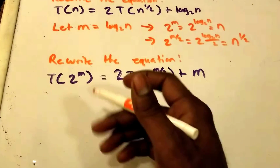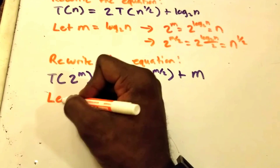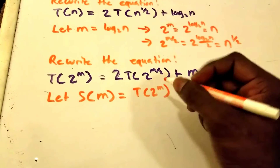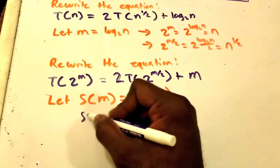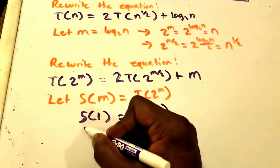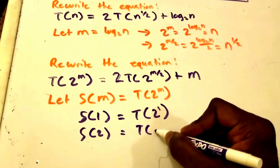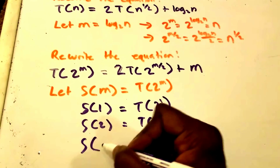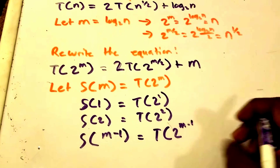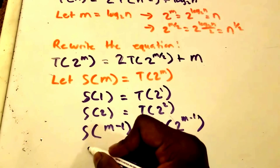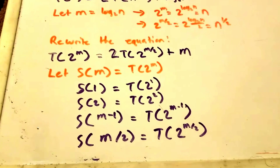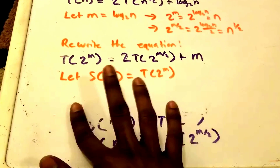To make it look cleaner, we're going to define a function S where S(m) = T(2^m). This means: S(1) = T(2^1), S(2) = T(2^2), S(m−1) = T(2^(m−1)), and S(m/2) = T(2^(m/2)). So the substitution simply maps the exponent as the argument of S.